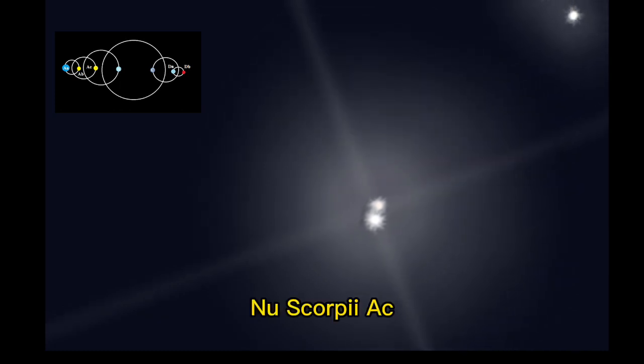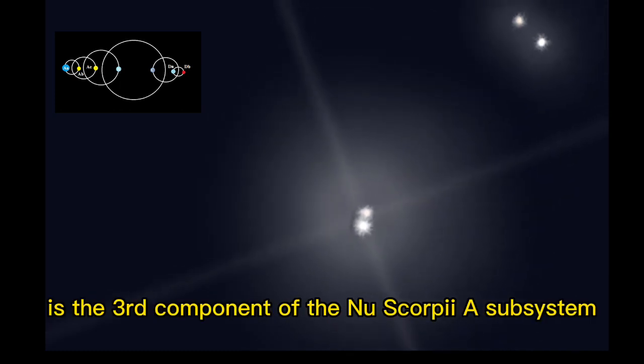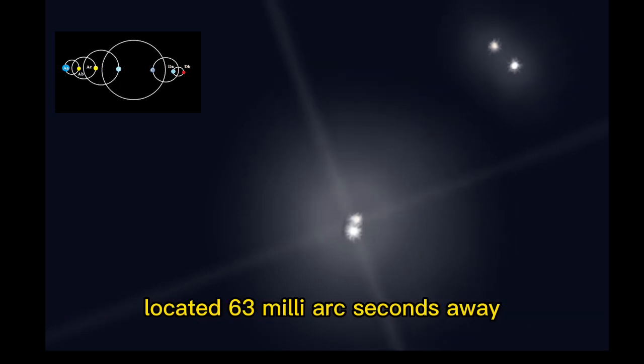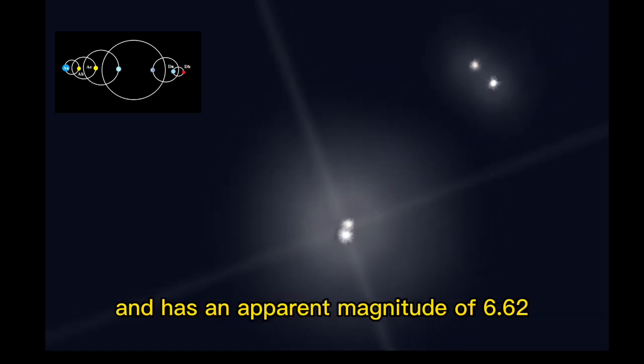Nu Scorpii Ac is the third component of the Nu Scorpii A subsystem, located 63 milliarcseconds away and has an apparent magnitude of 6.62.